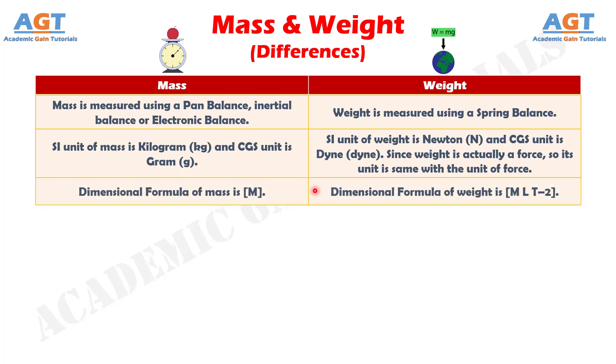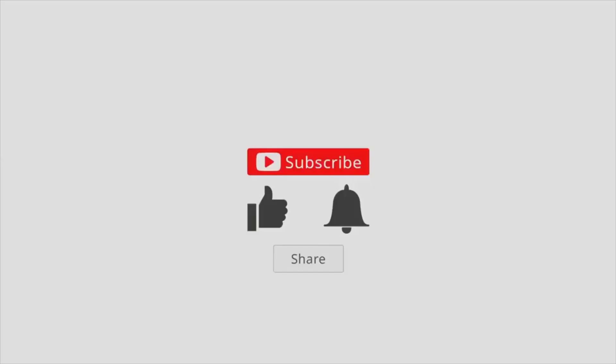Difference number 8: The dimensional formula of mass is M, whereas the dimensional formula of weight is MLT⁻².